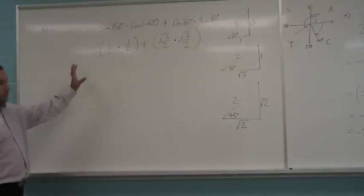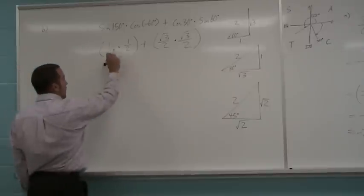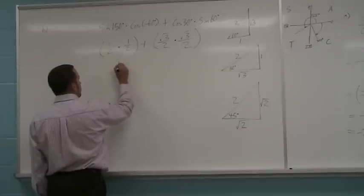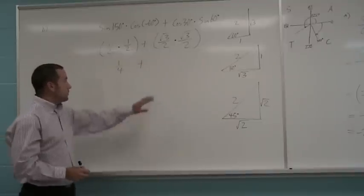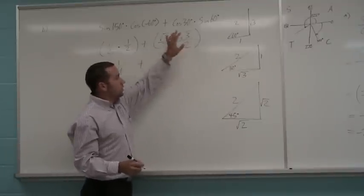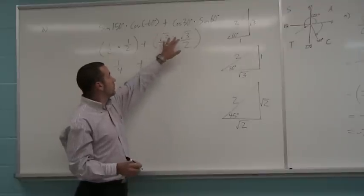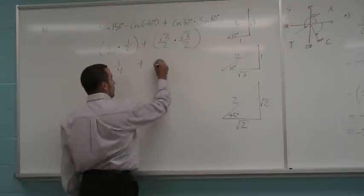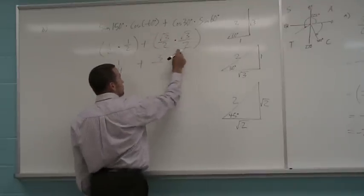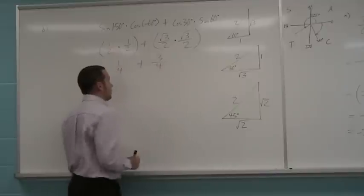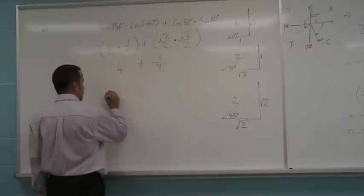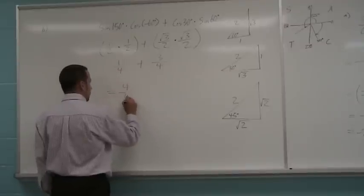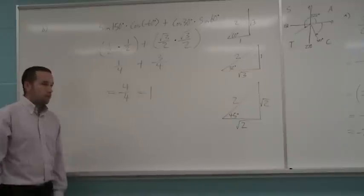BIDMAS tells us to do the multiplications first. 1 half times 1 half gives me 1 quarter. Plus, on the top, square root of 3 times square root of 3 in the numerator here. Square root of 3 times square root of 3 gives you 3. Bottom 2 times 2 gives you 4. 1 quarter plus 3 quarters gives you 4 over 4, or 1. And we're done.